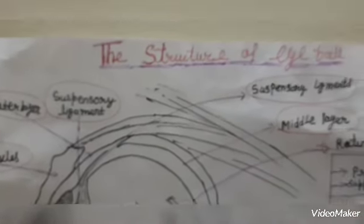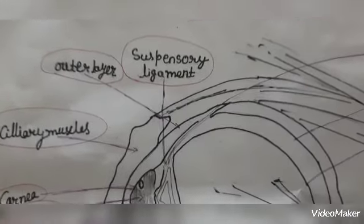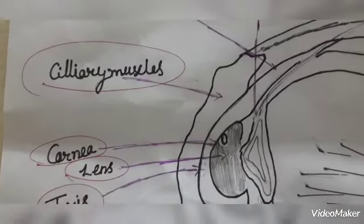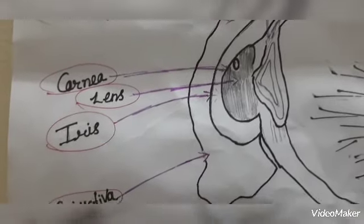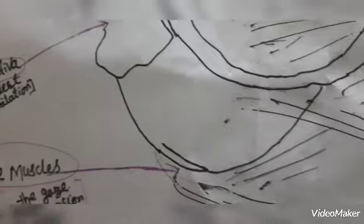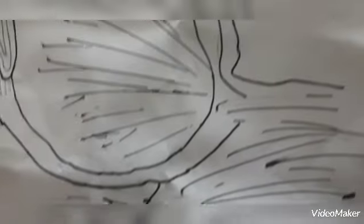So this is the structure of eyeball. This is the eyeball's structure. I am just taking revision here. You should note this in your copy, and I will see its diagram next class and will take a test for it.